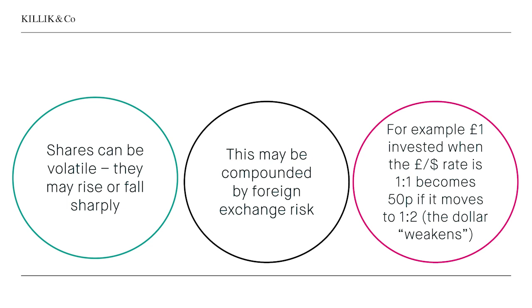Shares can be volatile — they may rise or fall sharply in their native currency, as with a UK investor buying UK stocks. But throw in foreign exchange risk and you've got potentially a double whammy. For example, if a pound is invested when the pound-dollar exchange rate is one to one, it could become 50p if the exchange rate moves to one to two, or the dollar weakens or the pound strengthens. That's because on retranslation, your original one dollar back in sterling terms is no longer a pound — it's only 50p.